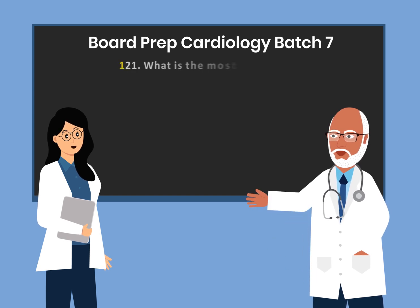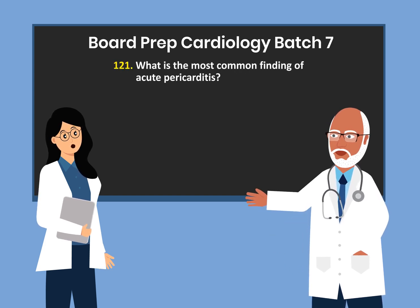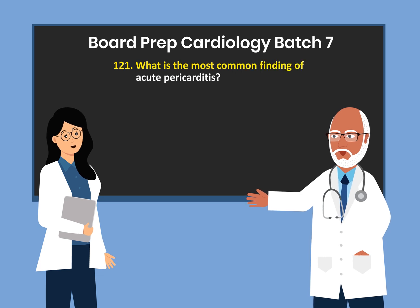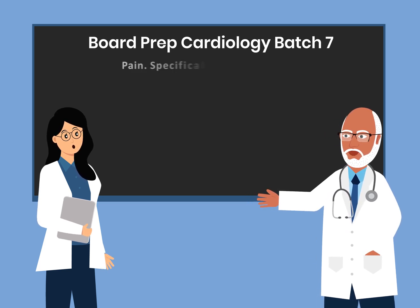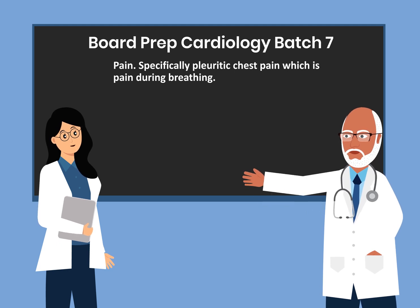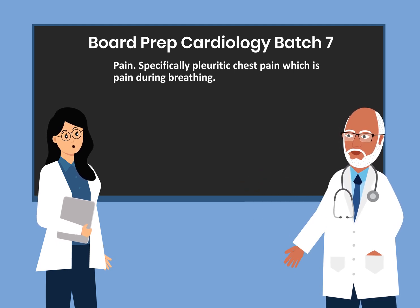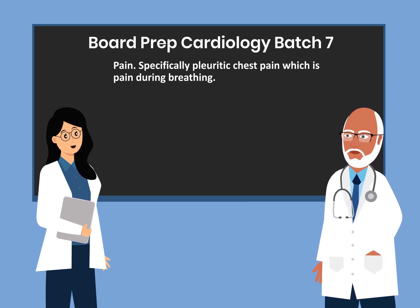Question 121. What is the most common finding of acute pericarditis? Pain — specifically pleuritic chest pain, which is pain during breathing.